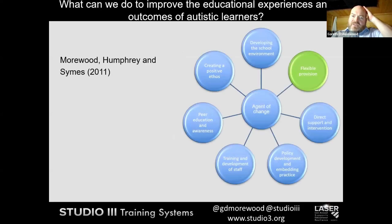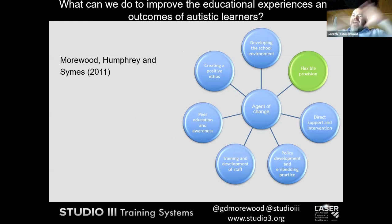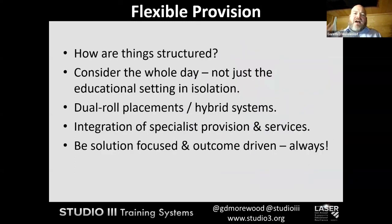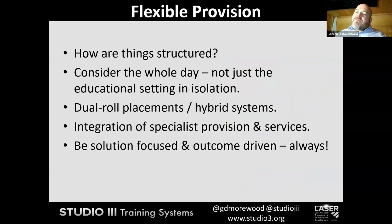It's absolutely within our gift to say we will not have bells ringing in our school — we'll just look at the time and allow people to naturally move around and transition without it being a massive stampede down the corridor. Simple things can often have a massive impact. The next area was flexible provision — we want to bring structure to the unstructured, bring that consistent approach to what is a very complex setting because there are lots of people coming from different journeys and experiences.